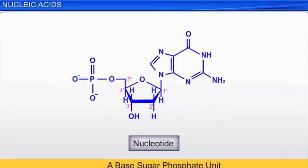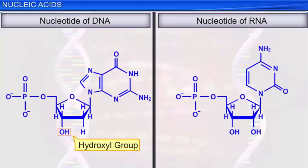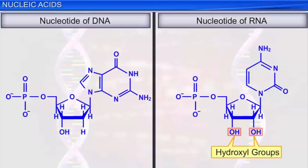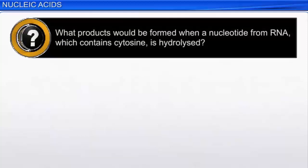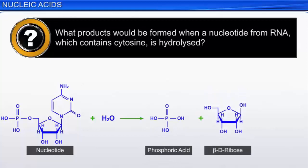Hydrolysis of a nucleotide from RNA which contains cytosine would produce phosphoric acid, beta-D-ribose, and cytosine. Nucleotides are linked together by phosphodiester linkages — connected by phosphate ester bonds linking the 5' phosphate group to the hydroxyl group of the sugar at the 3' position. The backbone of a polynucleotide chain is a repeating sequence of sugar-phosphate. The sequence of nucleotides in the chain of a nucleic acid is the primary structure of the nucleic acid, DNA or RNA.